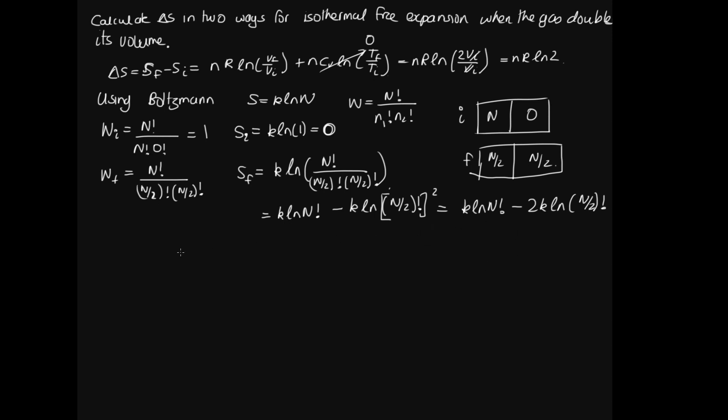Now in order to simplify this, we're going to use Stirling's rule, which told us that log of N factorial is pretty much equal to N log N minus N. So we'll substitute in now. So S final equals K. We'll pull that out the front of everything. Then we've got N log N minus N minus 2 times N on 2 log N on 2 minus N on 2.